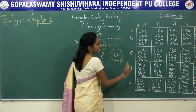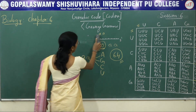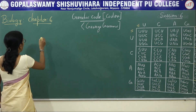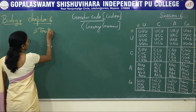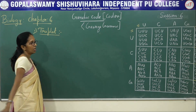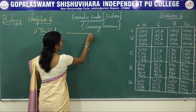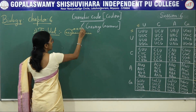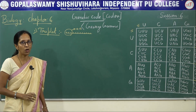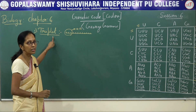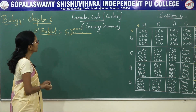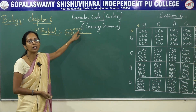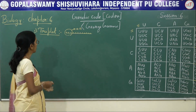Now coming to the characteristic or salient features of genetic code — very important for the examination. The first point: genetic code is said to be triplet. As the name itself indicates, there is a presence of a group of three nitrogen bases that can code for an amino acid. Therefore, the codon is said to be triplet.